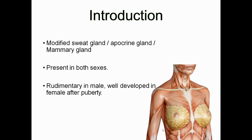First, we will see the introduction of the breast. Breast is a modified sweat gland, and we can say this is the apocrine gland. Sometimes we refer to the breast as the mammary gland. Breast is present in both sexes, but it is rudimentary in male and well developed in female after puberty.